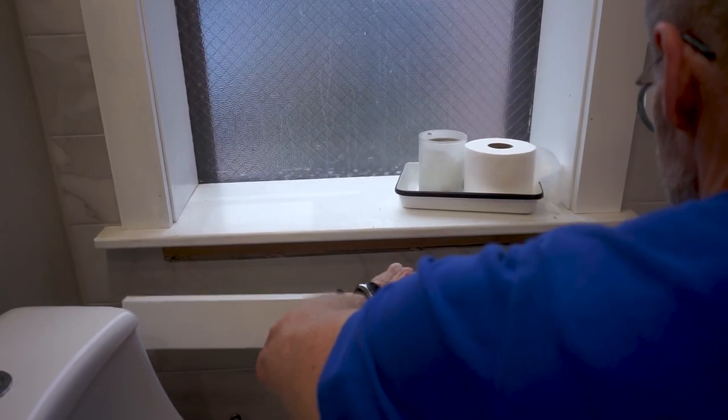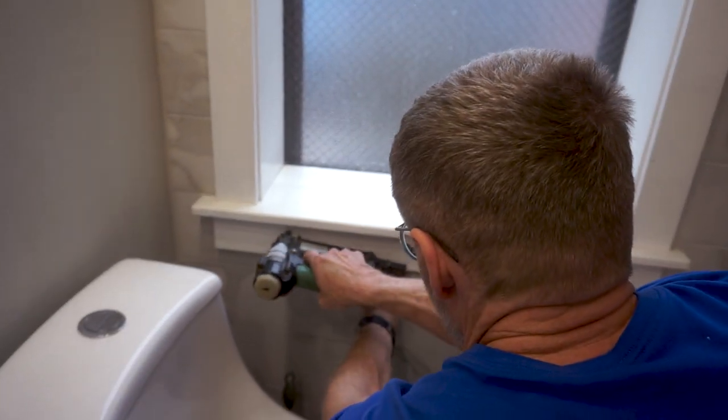Then I'll install the apron under the stool. I'll fill the nail holes with spackling, caulk around the edges, and then paint one more time.